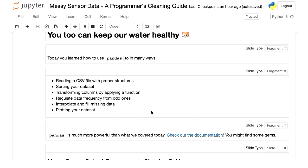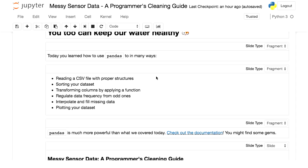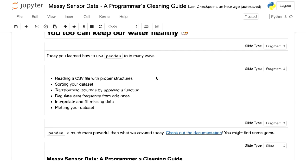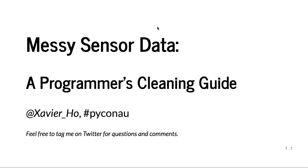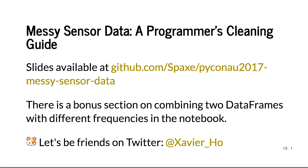Full disclosure: about a month ago I hadn't used pandas — I did this project all in plain Python. When I was about to give the talk, I thought: should I show this messy code, or learn pandas? I found all these functions that do exactly what I was doing in one or two calls. The slides are available at the link shown here. There's also a bonus section on combining two data frames — I have weather data and cloud observation data with different frequencies, and I show how to join them. Feel free to connect on Twitter, or come up and chat.